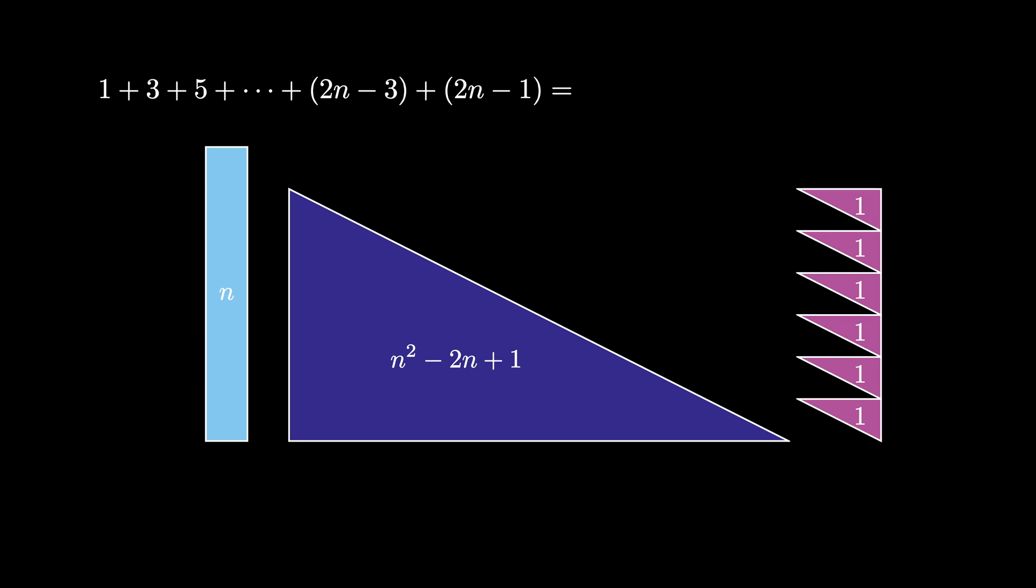Combining these areas together, we get that the sum of the first n odd positive integers is n plus n squared minus 2n plus 1 plus n minus 1. But this simplifies to n squared, and therefore the sum of the first n odd positive integers is n squared.